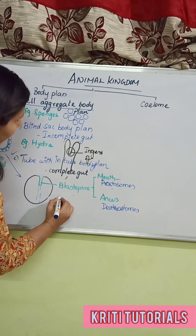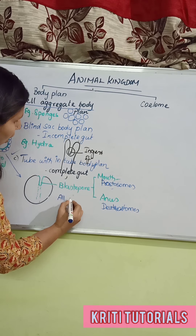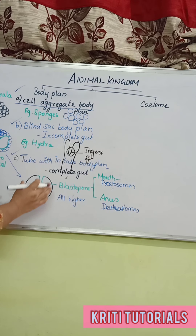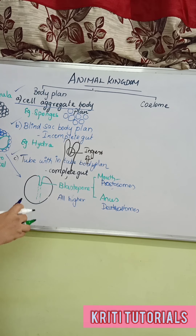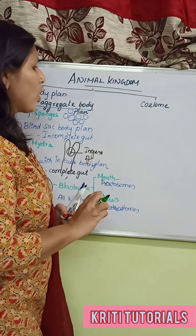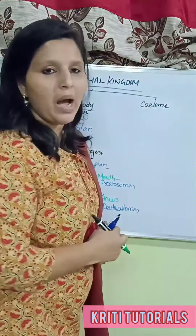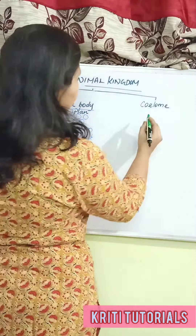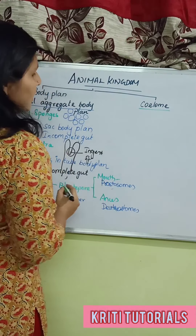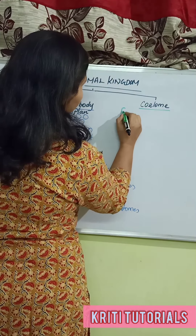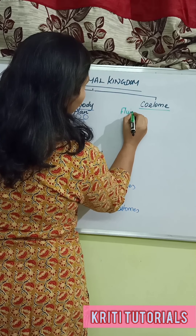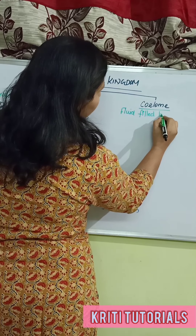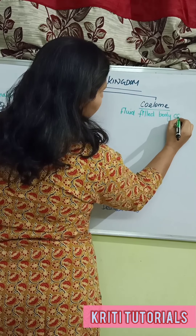All higher organisms come under the tube within tube body plan. The next concept we are going to see about in Kingdom Animalia is the coelom. Coelom is nothing but the fluid-filled body cavity.